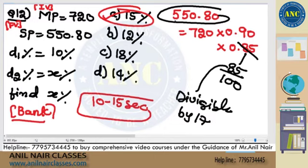550.80. 17 threes are 51, 40. 17 twos are 34, 68. 17 fours are 68. Answer is 15. 10 to 15 seconds to solve the question.